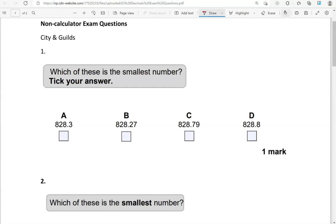You can think of this as if it was money. So, if you had 828.30, 828.27, 828.79, 828.80. Which one is the smallest of them all? That's this one, because it has only 27 pence after the 828 pounds. I added zeros here to make it easy to compare. And zeros at the end, after the decimal point, they will make no difference. So, 828.8 has the same value as 828.80. That's why.